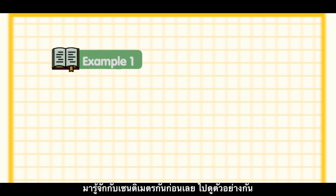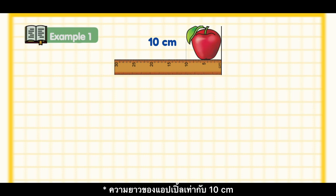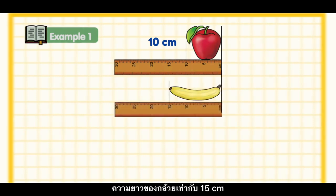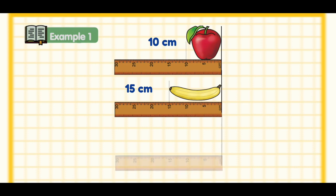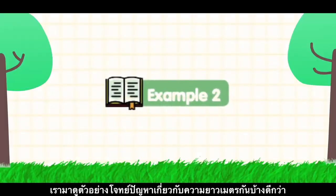For these examples, we'll be using the centimeter ruler. The length of this apple is equal to 10 centimeters. The length of this banana is equal to 15 centimeters. The length of this jackfruit is equal to 30 centimeters.